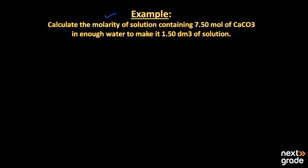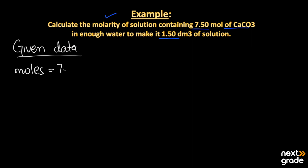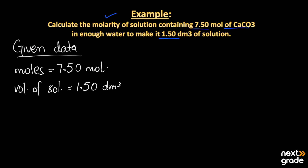Here is the first example: calculate the molarity of a solution containing 7.50 moles of calcium carbonate dissolved in enough water to make 1.50 dm³ of solution. Given data: number of moles = 7.50 mol, volume of solution = 1.50 dm³.